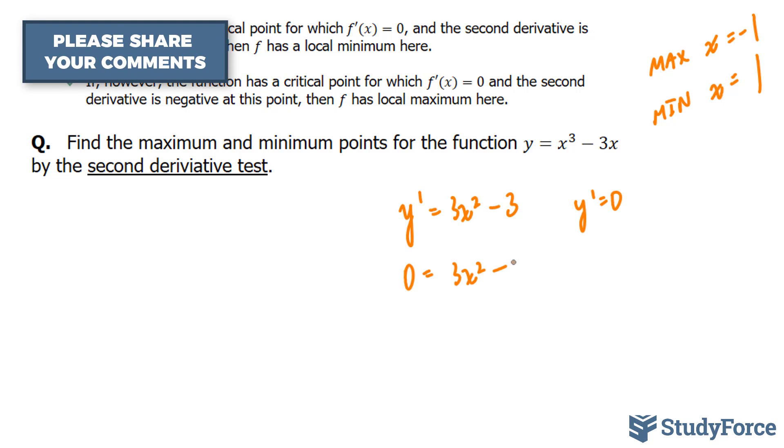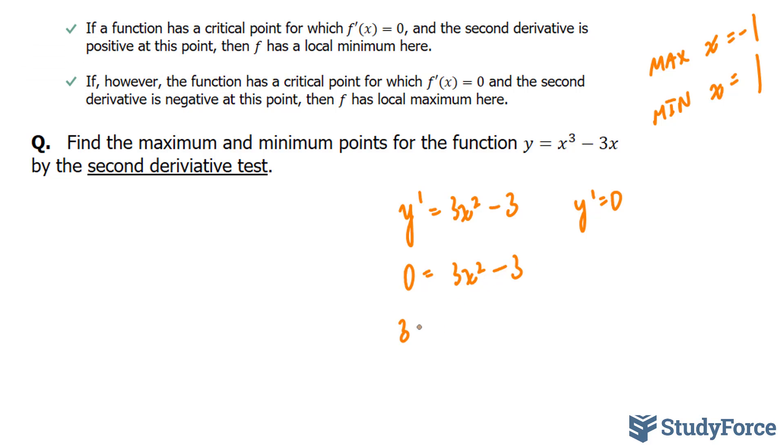Zero is equal to 3x squared minus 3, solving for x. Here we bring this term over, divide both sides by 3. We end up with 1 is equal to x squared, and therefore x is equal to plus minus 1.